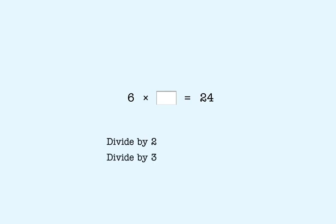We start by dividing 24 by 2, and we get 12. Now we divide 12 by 3. We know that 12 divided by 3 is 4. That means the missing factor is 4.